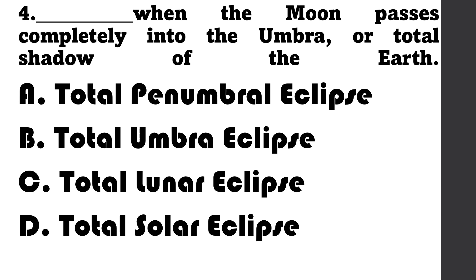Number 4: Blank — when the moon passes completely into the umbra or total shadow of the earth. A. Total penumbra eclipse, B. Total umbra eclipse, C. Total lunar eclipse, D. Total solar eclipse.